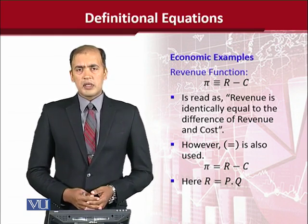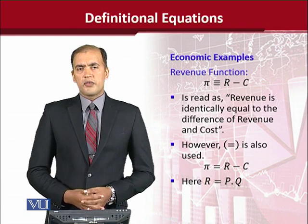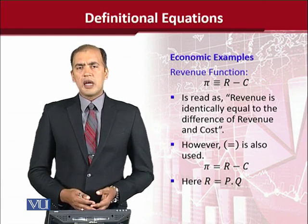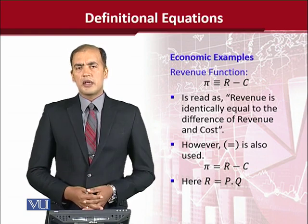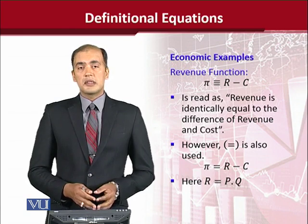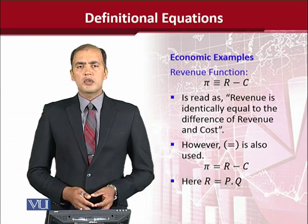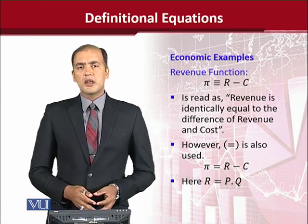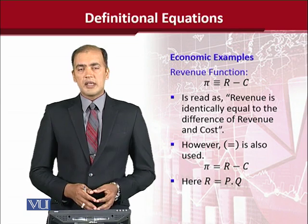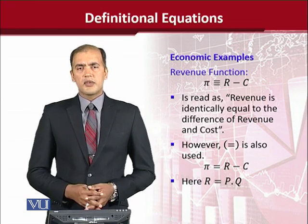In our routine analysis in economics of the profit function, we usually don't write the three lines of the identity sign. Rather, we write the two lines — that is the usual equality sign. It does not mean we should not know that this is an identity. It is just for the sake of ease, because equality is used most of the time in mathematical analysis. Even if we use the equal sign instead of the identity sign, it is actually still an identity — we use equality simply for simplicity.